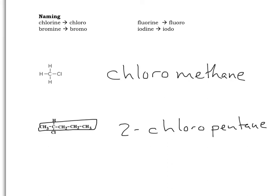So, we have chloromethane and 2-chloropentane. The additional halogen names are up above there.